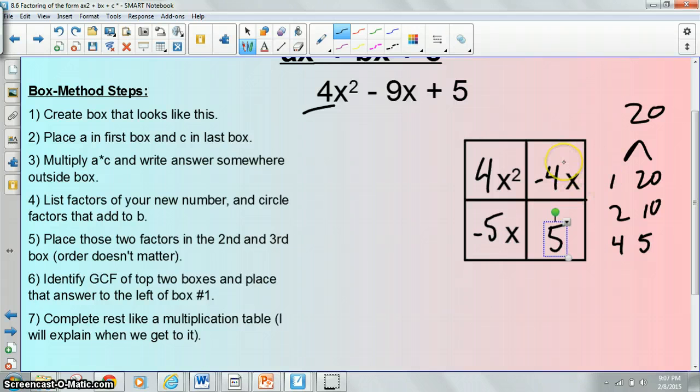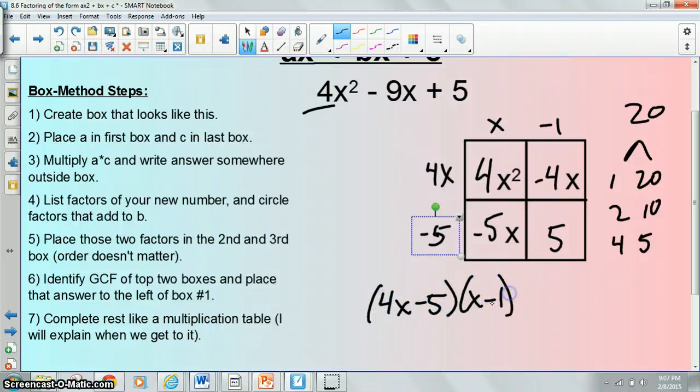Greatest common factor of the top two would be 4x. 4x times x is 4x squared. x times this has got to be negative 5x, so that answer would be negative 5. 4x times 1 is negative 4x. That would be negative 1. Is negative 1 times negative 5 positive 5? It is. So your answer is 4x minus 5 and x minus 1.